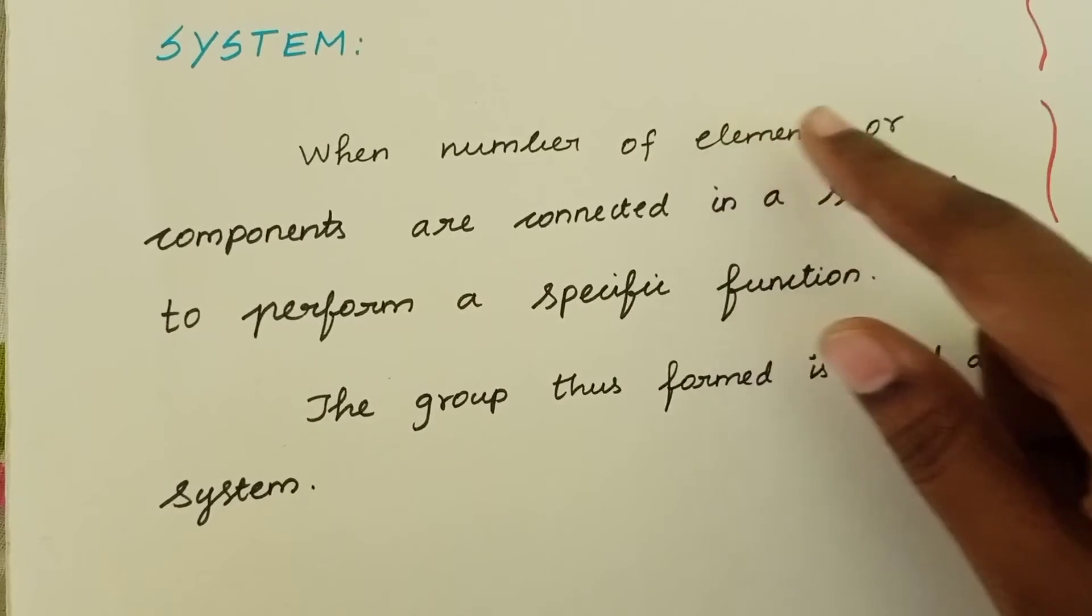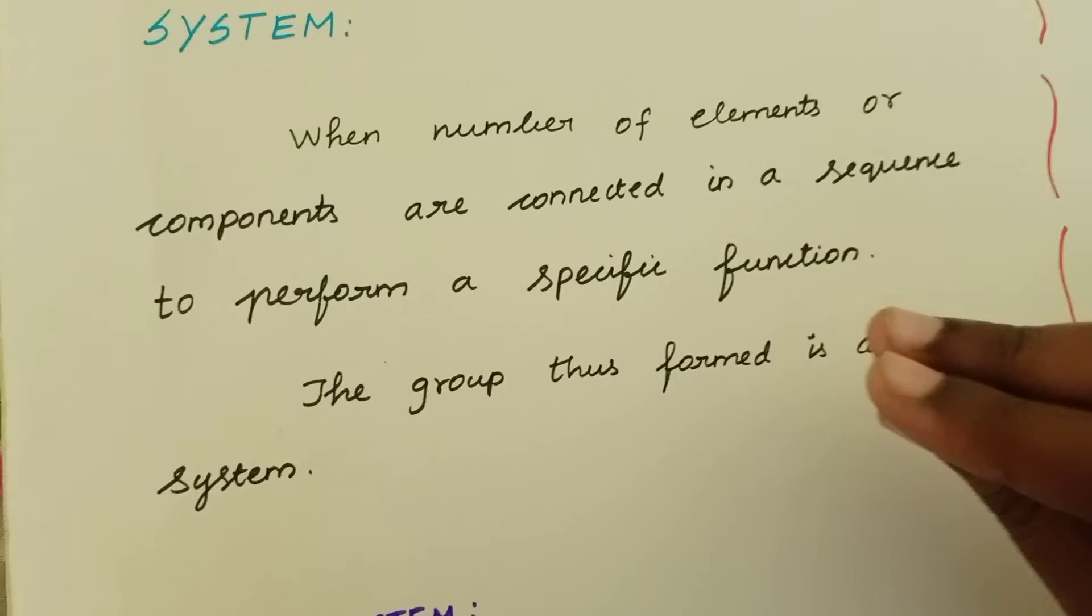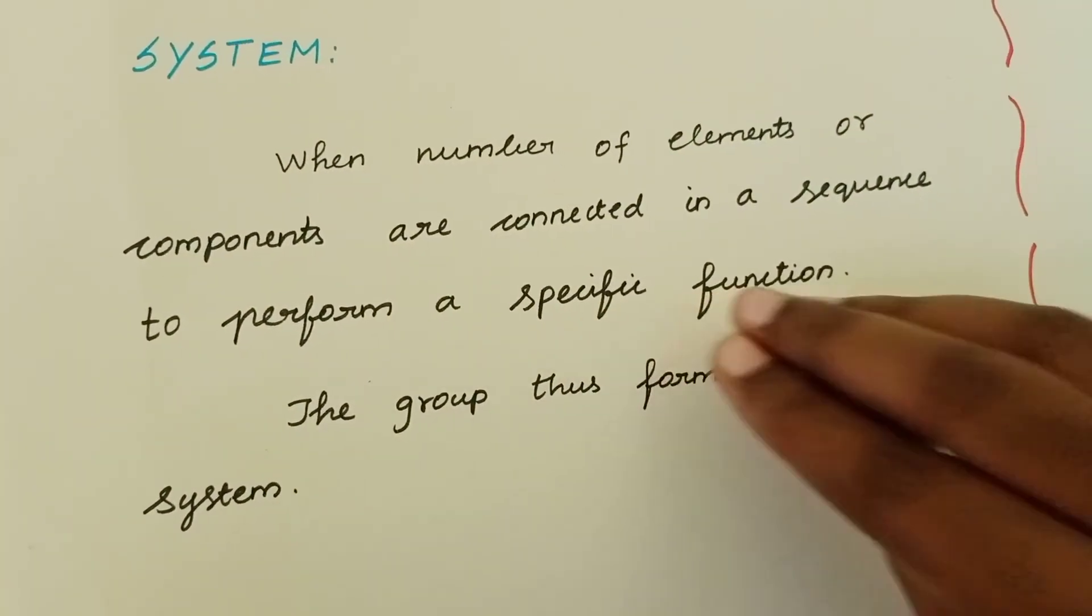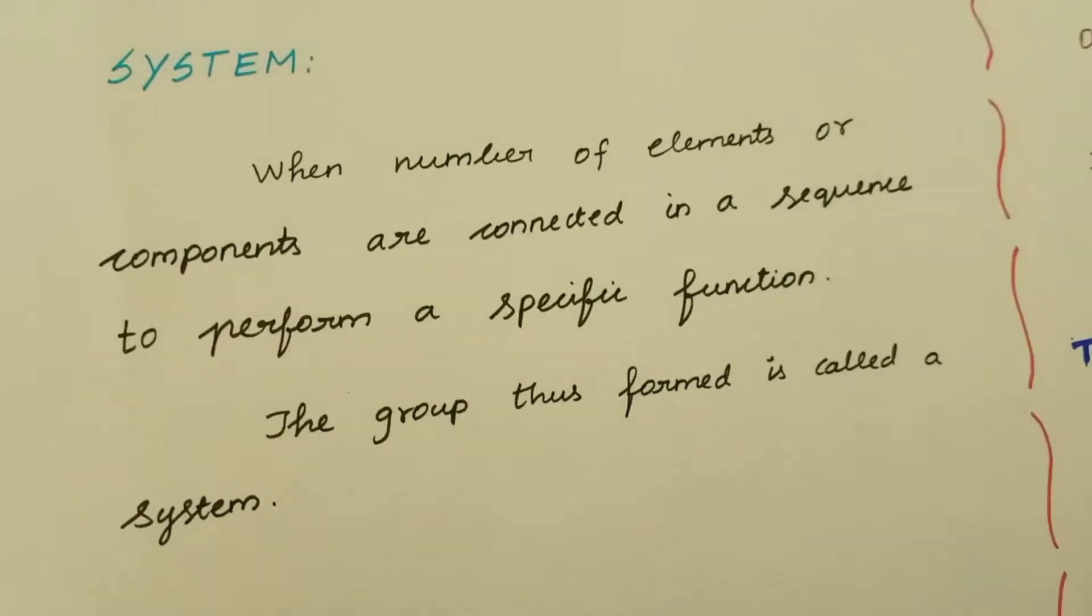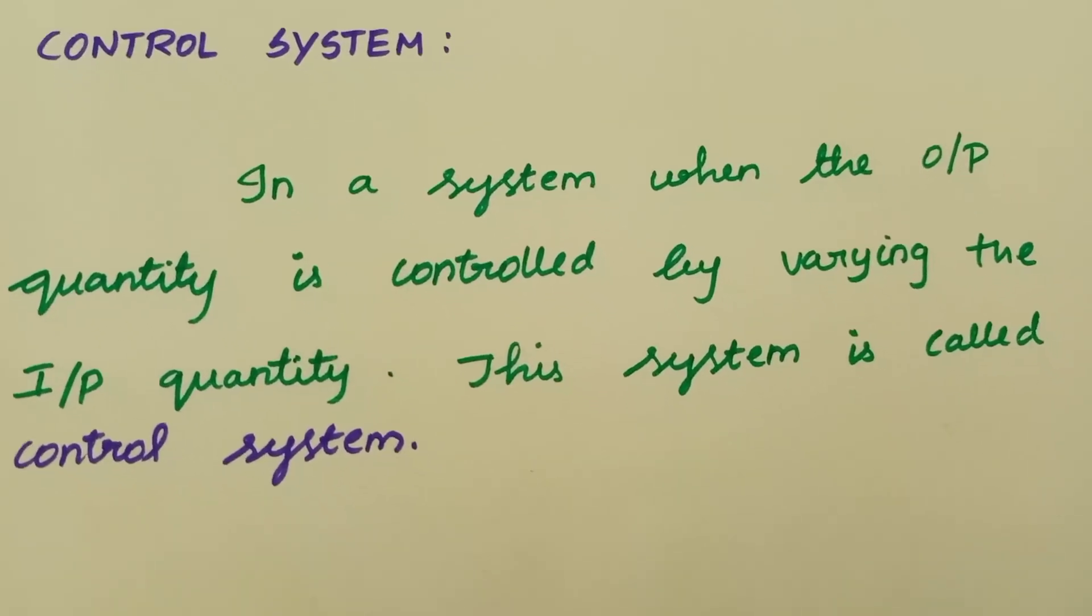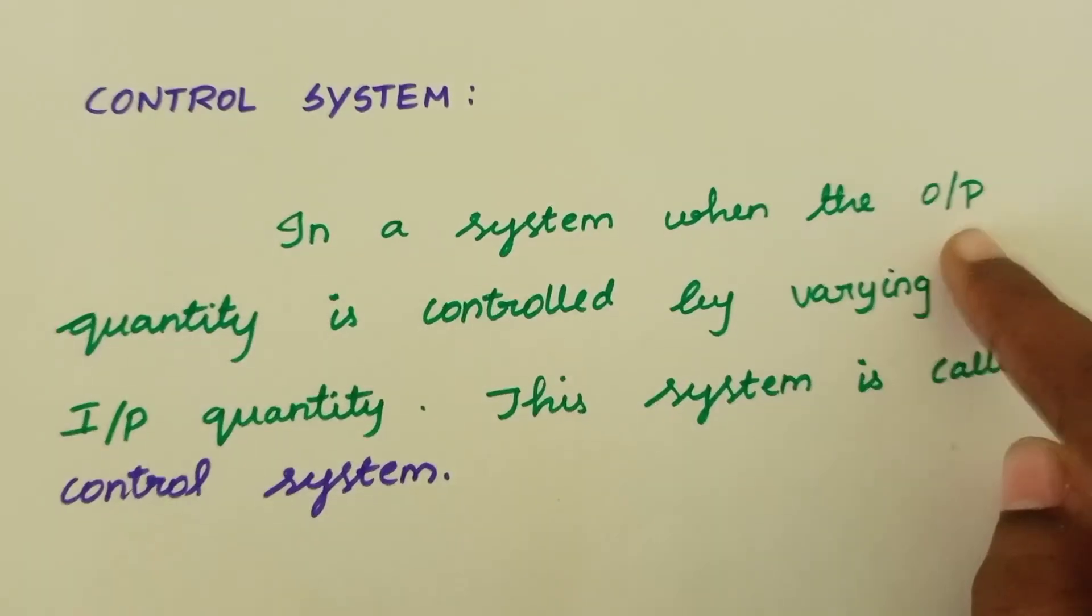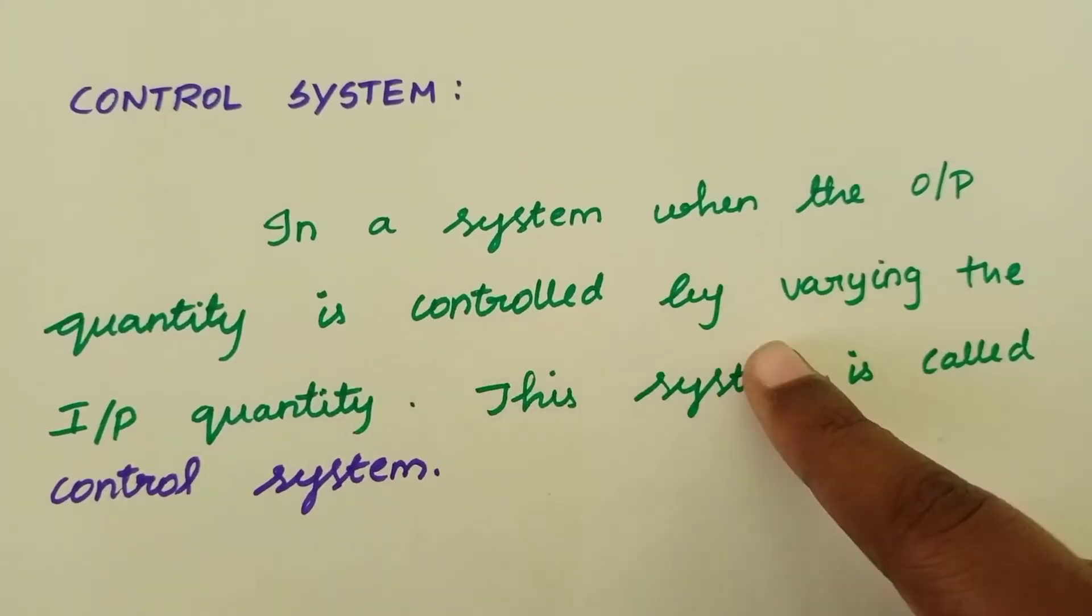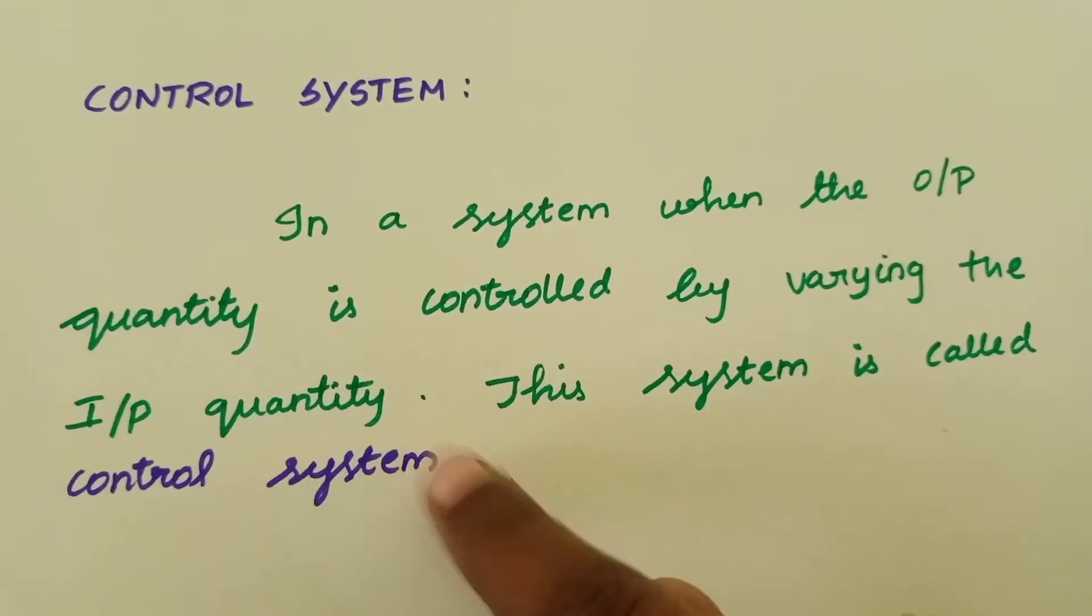The elements and components are connected according to rules to perform a specific function. The group thus formed is called a system. Now, control system is very easy. In a system, when the output quantity is controlled by varying the input quantity, this system is called a control system.